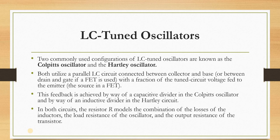Two commonly used configurations of LC tuned oscillators are the Colpitts oscillator and the Hartley oscillator. In both oscillators, we use an inductor and capacitor in a parallel combination. The difference is how these components are selected: Colpitts uses two capacitors and one inductor; Hartley uses two inductors and one capacitor.